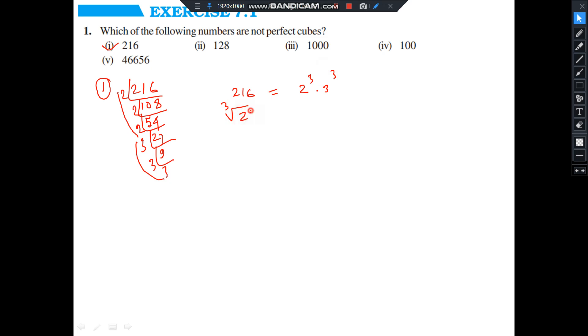So cube root of 216, that is equal to 2 into 3. Cube root of 216 equals 6.